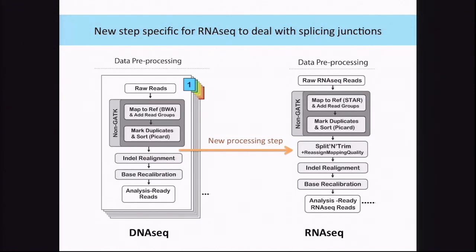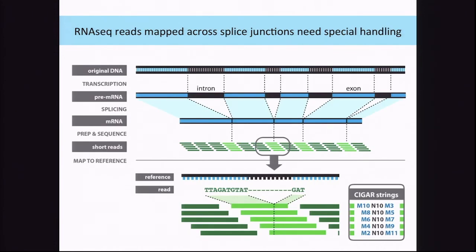The second main difference is a tool we call SplitNCigarReads — split and trim — and I will explain it. It does not exist in the DNA pipeline at all because there is no need for it. But in the RNA pipeline, there is a need for this new tool. We already saw this cartoon figure of mapping and aligning the RNA reads.